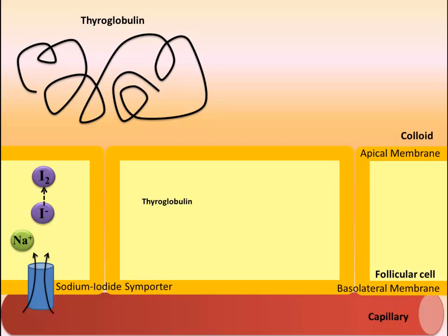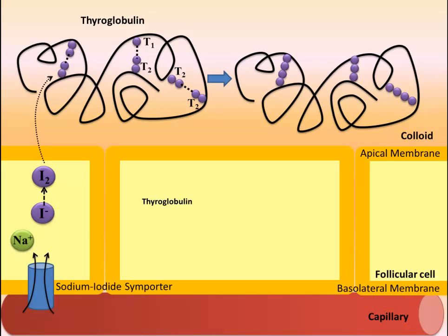The thyroglobulin protein, which is now inside the colloid, can become iodinated at tyrosine residues. Each tyrosine can have one iodine added to form T1, or two iodines added to form T2. During the last step of synthesis, a T1 and T2 molecule join to form T3, or two T2 molecules join to form T4. The joining of two T2 molecules forms the thyroid hormone T4, also called thyroxine. The joining of a T1 and T2 molecule forms triiodothyronine, or T3.